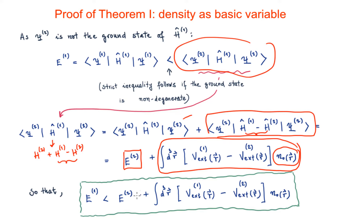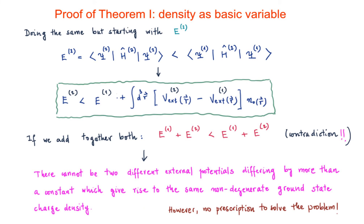We can do exactly the same starting with E2 instead of E1, and following the same procedure we get the relation: E2 < E1 + ∫(Vx2 - Vx1) N0 dr.